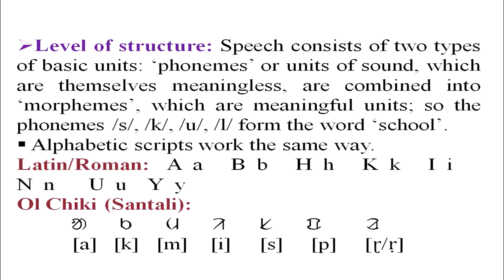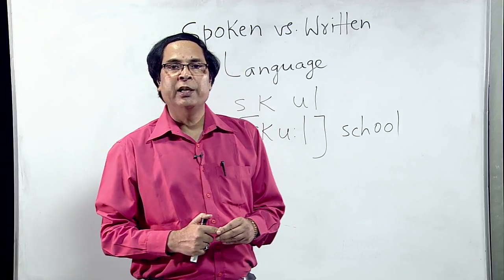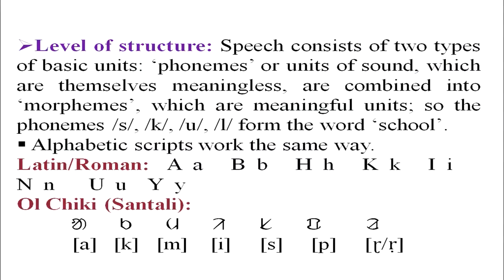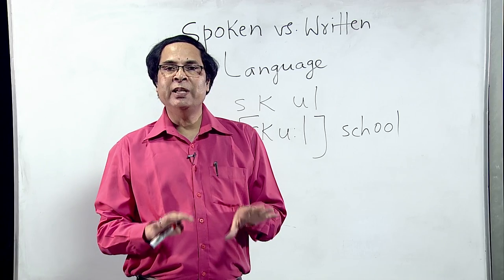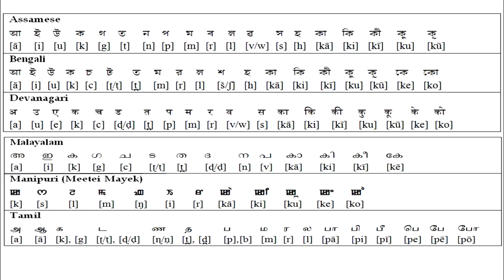Examples of alphabetic scripts include Assamese, Bengali, Devanagari — used for Hindi, Maithili, Sanskrit, Konkani, and Marathi — as well as Malayalam, Manipuri using the Meitei Mayek script, and Tamil.